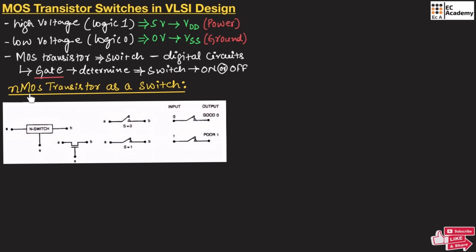First, let us understand the NMOS transistor as a switch. This is the representation of an N-switch — an NMOS transistor and its operation as a switch. The gate terminal is represented as S, which acts as the switch control.